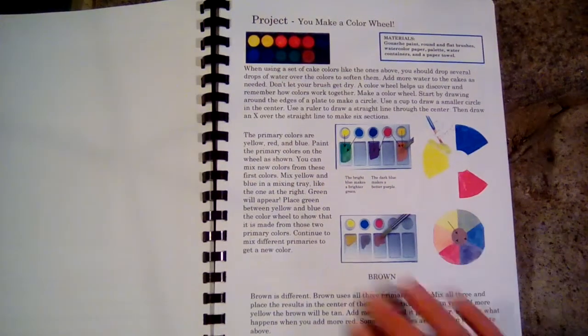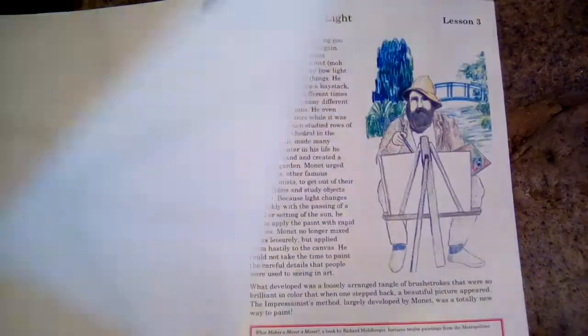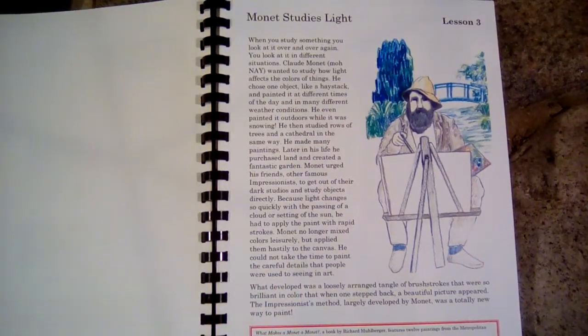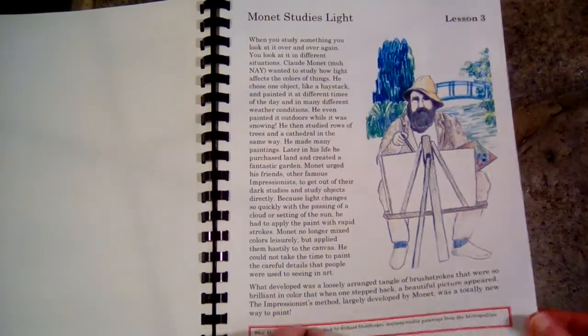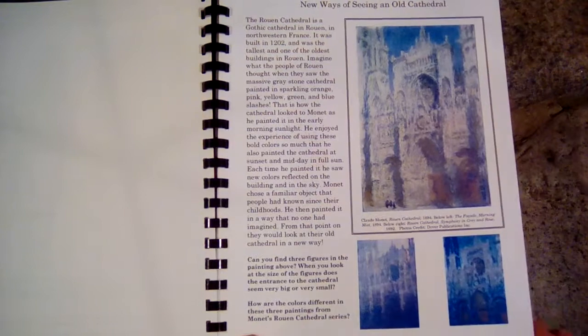So if you have been using book one and book two, something nice is that the first book starts in ancient times, and then the middle book is kind of like medieval or Renaissance, and then this third book goes all the way up to modern art.